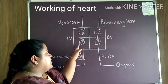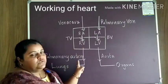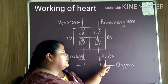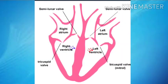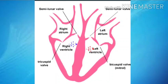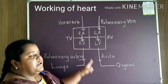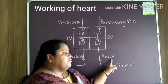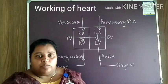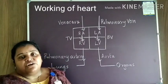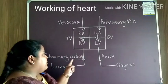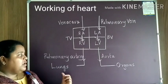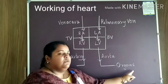Then the ventricles contract. The blood from the right ventricle enters the pulmonary artery, and the blood from the left ventricle enters the aorta. At the same time, the atria relax and get filled with blood again. At the tip of the pulmonary artery there is a valve known as the pulmonary valve, and at the tip of the aorta there is a valve known as the aortic valve. This prevents the backward flow of blood into the heart. The pulmonary artery carries the blood to the lungs for purification, and the aorta carries the blood to the organs.